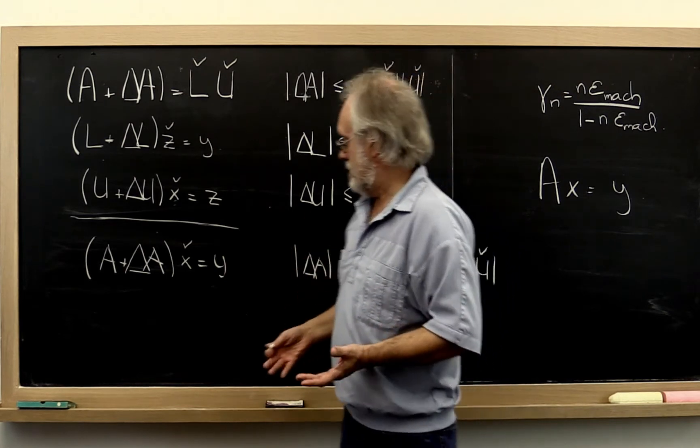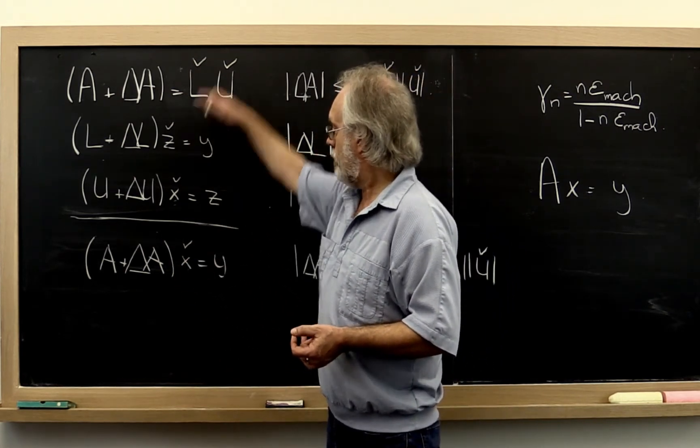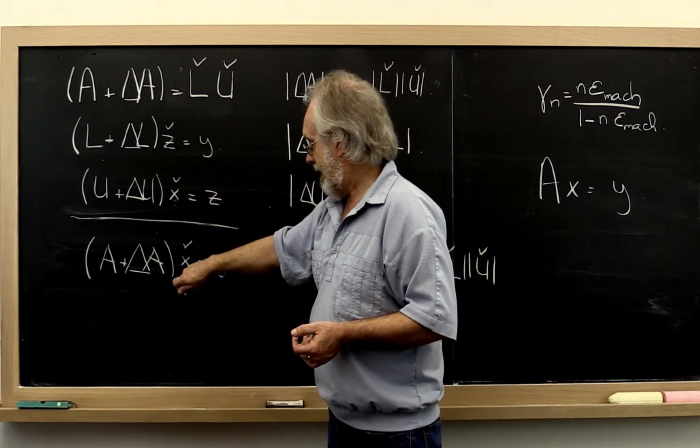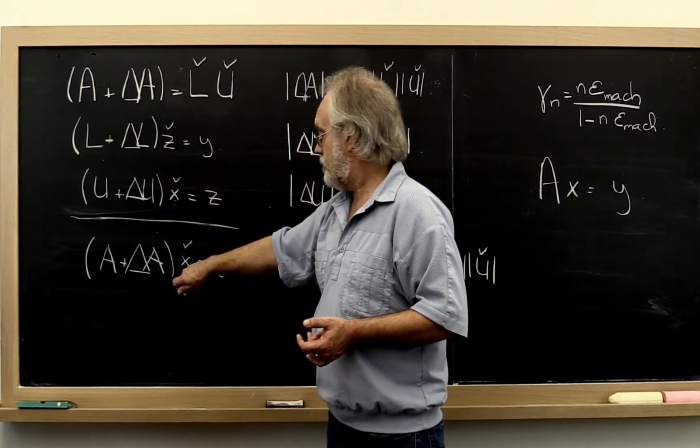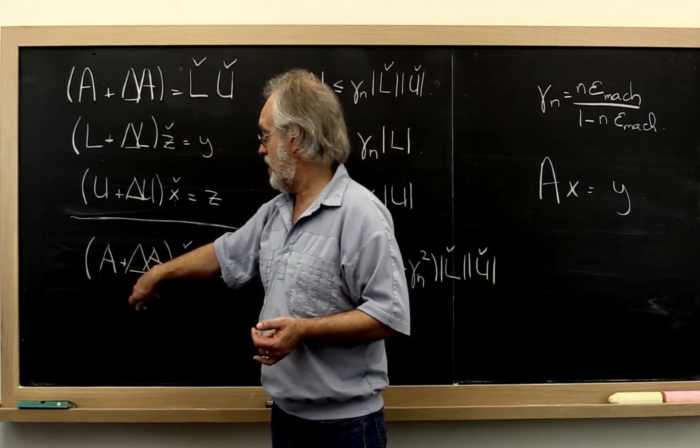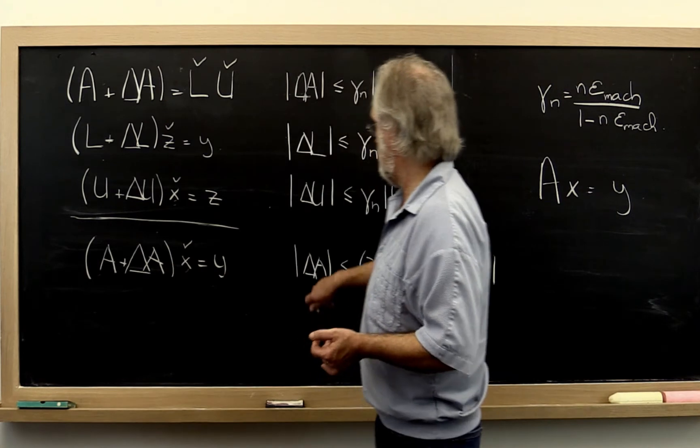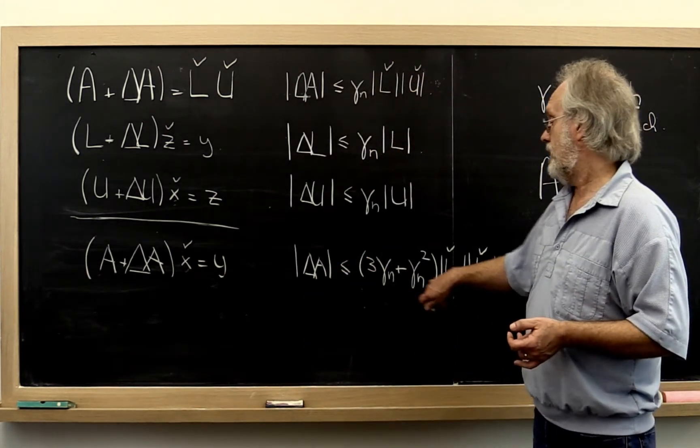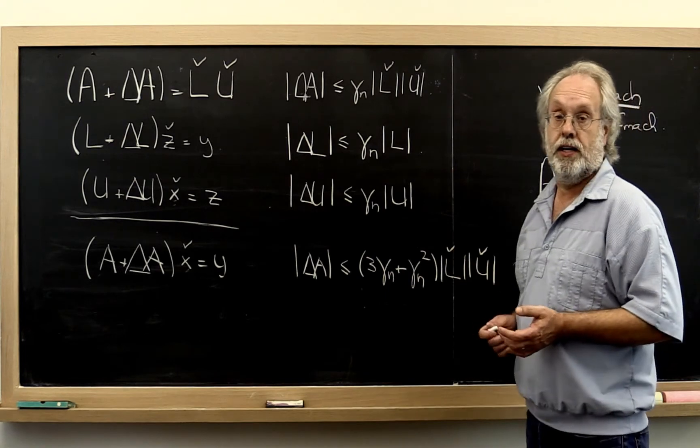The backward error says the computed result from going through all of these steps is the actual solution to a linear system that has been slightly changed. And that change in absolute value element-wise is bounded by this expression right here.